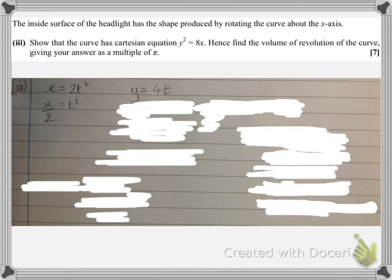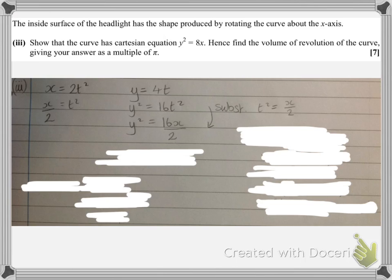So I'm going to rearrange just by dividing by 2 to get that t squared is x over 2. And I've got y equals 4t, but I can see the expression I'm looking for has a y squared. So if I square both sides I'll get something with t squared which I can then substitute for x over 2. So by squaring both sides I've got y squared is 16t squared, and then substituting in the t squared is x over 2, that will give me that y squared is 16x over 2, and then the 16 divided by 2 will divide to give me that y squared is 8x.